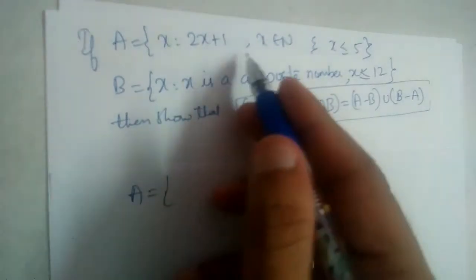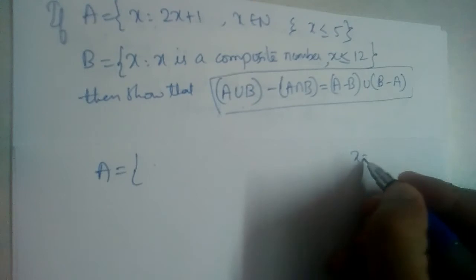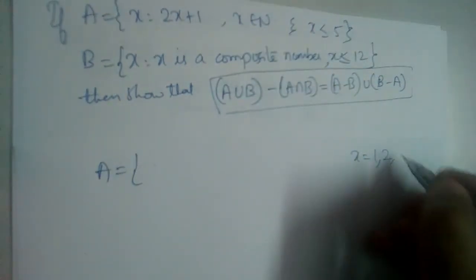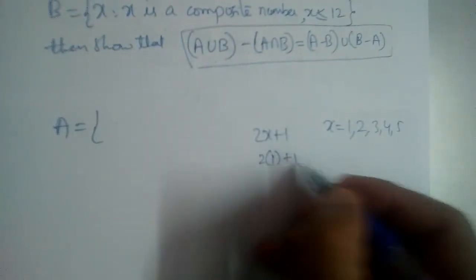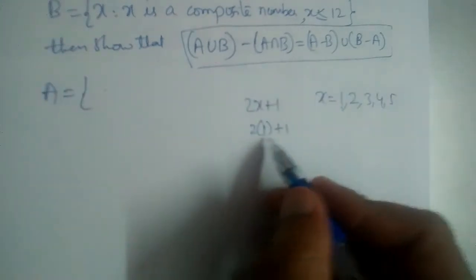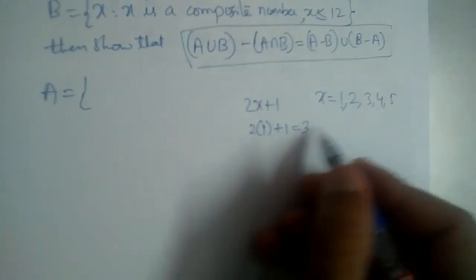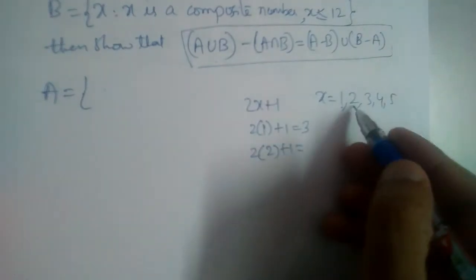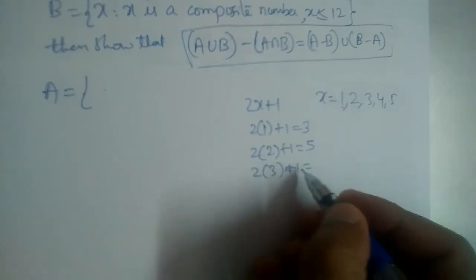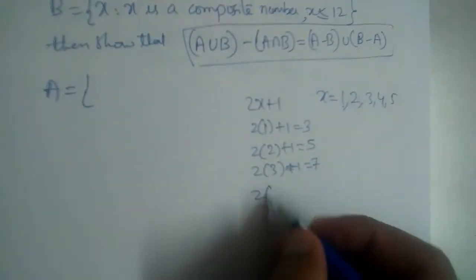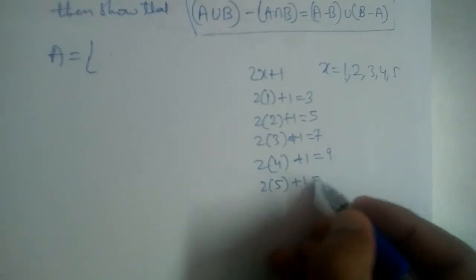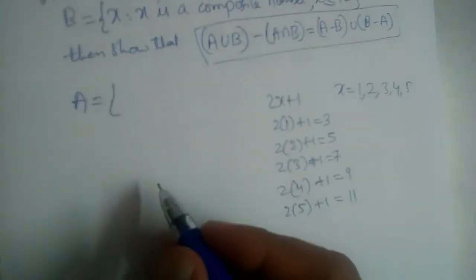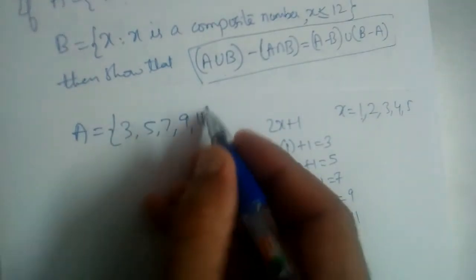For set A, we have 2x plus 1 where x is a natural number less than or equal to 5, so x goes from 1 to 5. Substituting: x=1 gives 3, x=2 gives 5, x=3 gives 7, x=4 gives 9, and x=5 gives 11.